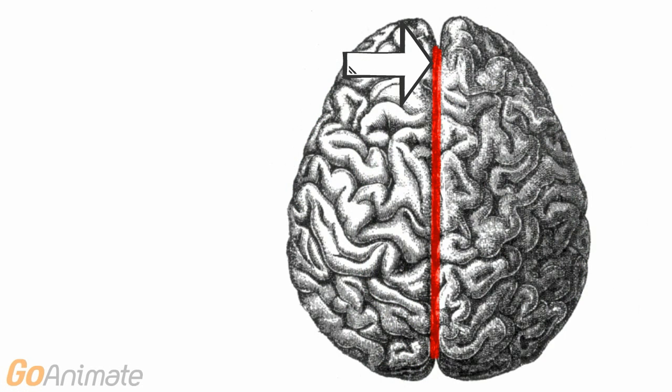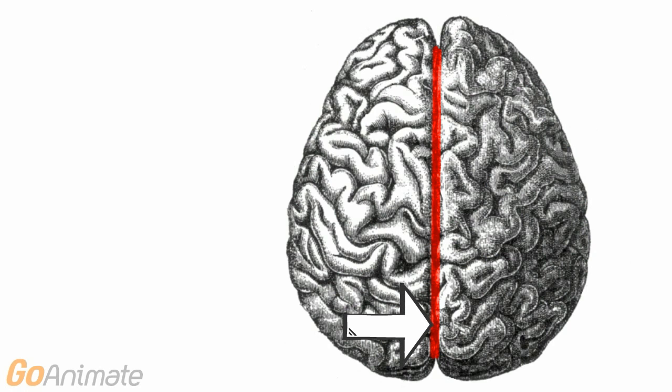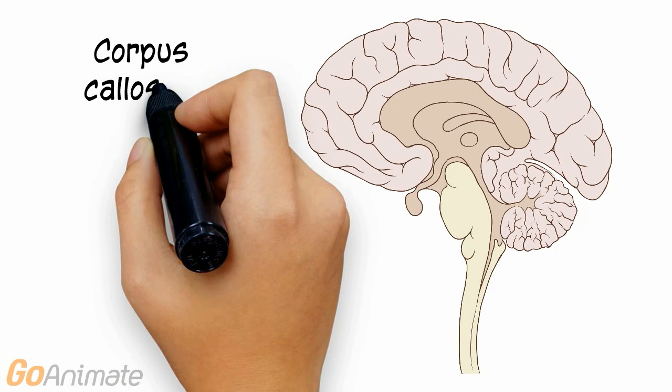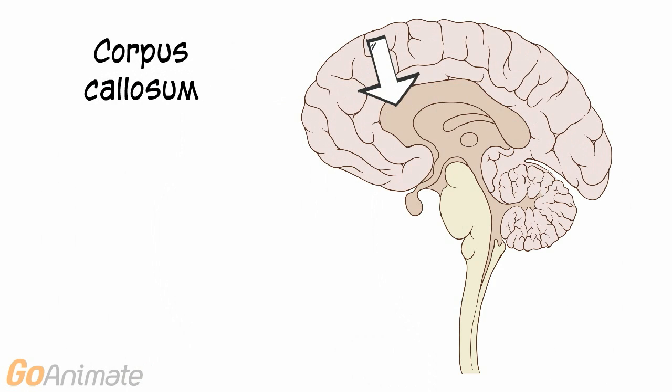The cerebrum is divided into two hemispheres by the longitudinal fissure. This is a mid-sagittal section of the brain. We can see the corpus callosum, a white matter bridge that unites both hemispheres of the cerebrum.